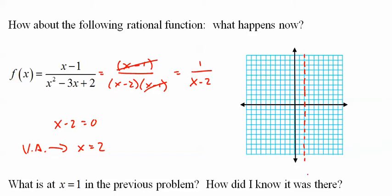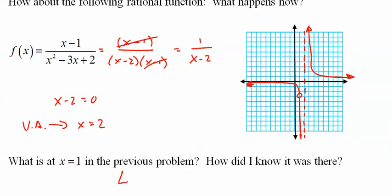If we look at this and put zero in, let's find out what's going on right here, we'd get negative one-half. So it'd be down here. I'm going to guess that this is doing something like this, except right there is something we call a hole. What is x equals 1 in the previous problem? A hole. How did I know it was there? It's a canceled factor.